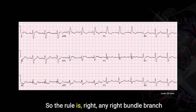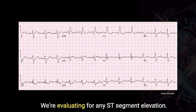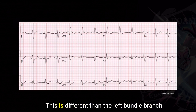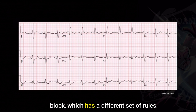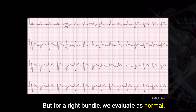So the rule is: any right bundle branch block, we're treating like a normal STEMI — we're evaluating for any ST segment elevation. This is different than the left bundle branch block, which has a different set of rules. But for a right bundle, we evaluate as normal.